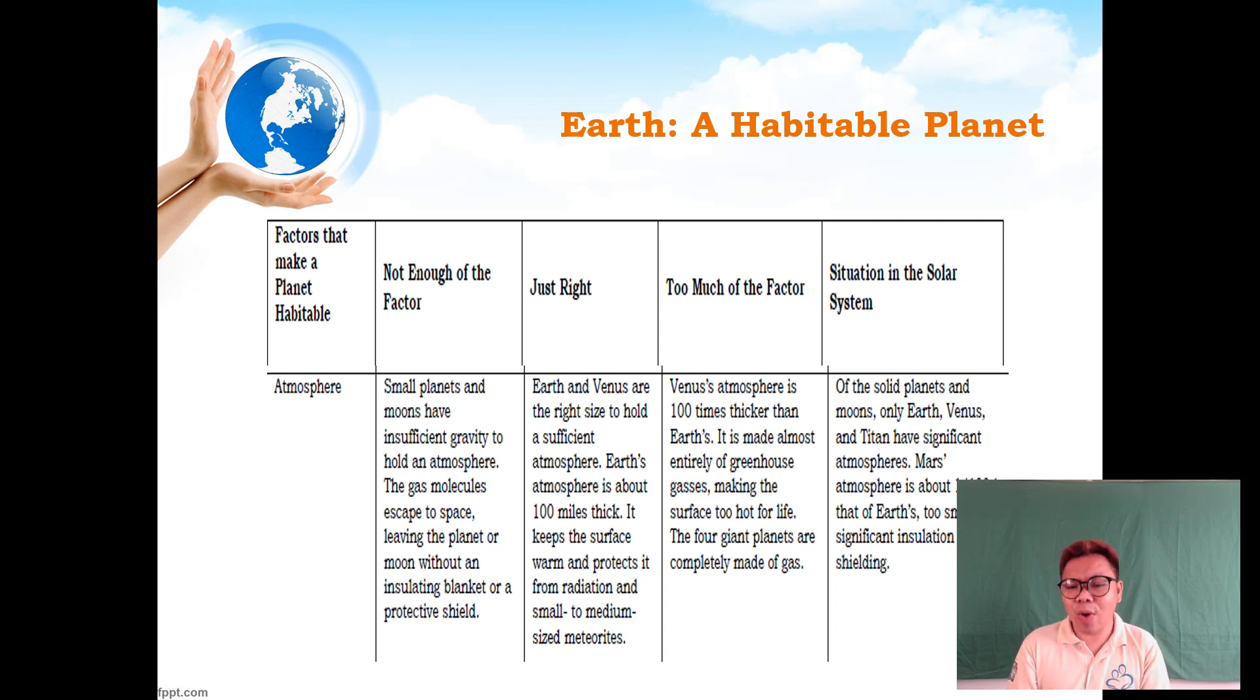Its effect on Venus is an entirely greenhouse gas atmosphere, making the surface too hot for life. The four giant planets—Jupiter, Saturn, Uranus, and Neptune—are completely made of gas. They have the thickest atmospheres ever in the solar system. Of the solid planets and moons, only Earth, Venus, and Titan have significant atmospheres. Mars' atmosphere is about one-hundredth of Earth's, too small for significant insulation and shielding.